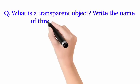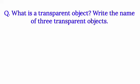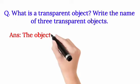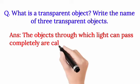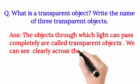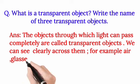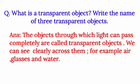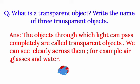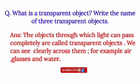What is a transparent object? Write the name of three transparent objects. Answer: The objects through which light can pass completely are called transparent objects. We can see clearly across them. For example: air, glass, and water.